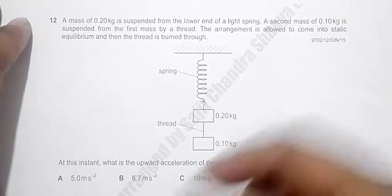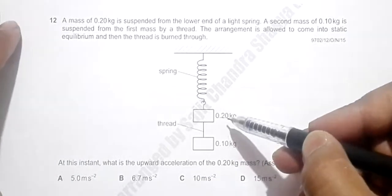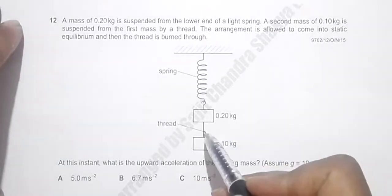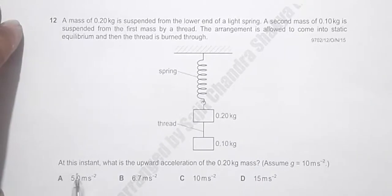And then the thread is burned through. So at this instant, as soon as the thread burns, what is the upward acceleration of the 0.20 kg mass?